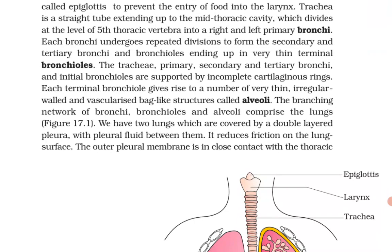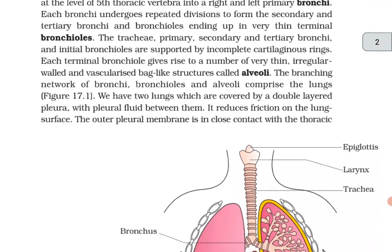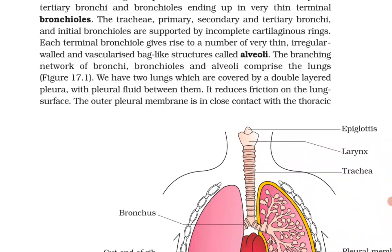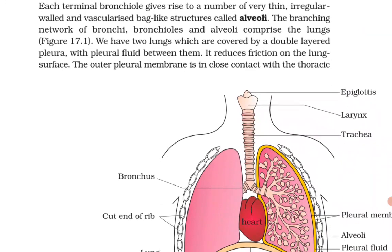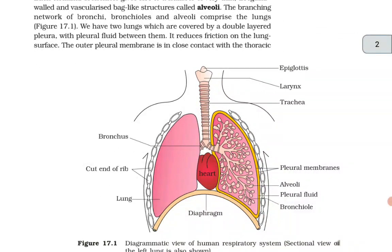The trachea, primary, secondary and tertiary bronchi, and initial bronchioles are supported by incomplete cartilaginous rings. Each terminal bronchiole gives rise to a number of very thin, irregular, vascularized sac-like structures called alveoli. The branching network of bronchi, bronchioles and alveoli comprises the lungs. We have two lungs which are covered by the double-layered pleura with pleural fluid between them, which reduces friction on the lung surface.